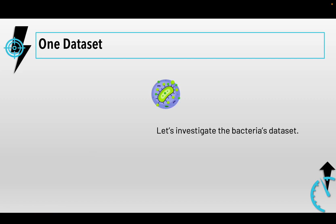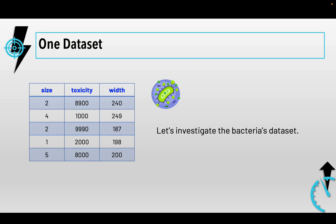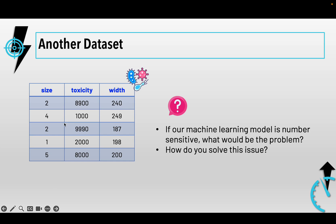Let's take a look at a specific dataset and learn why data rescaling is important. This data is about bacteria — it has three columns recording size, toxicity, and width. If you look at all these columns, you'll notice that size is a really small single-digit number, toxicity is a four-digit number over a thousand, and width is a three-digit number.